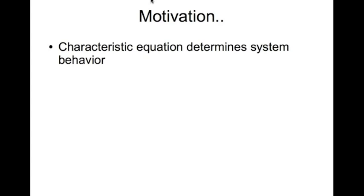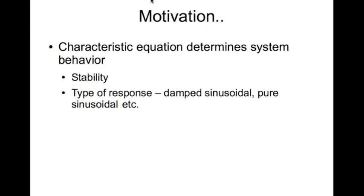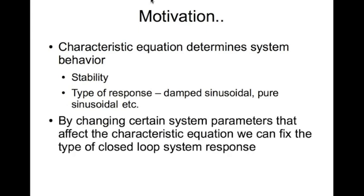The motivation is that the characteristic equation pretty much determines system behavior. You have or do not have system stability depending on the roots of the characteristic equation. The type of response — damped sinusoidal, pure sinusoidal, overdamped, underdamped, critically damped — everything is determined by the characteristic equation. If you can change the roots of the characteristic equation, and because of that the poles of the closed-loop transfer function, by changing a single parameter, then we can do design.